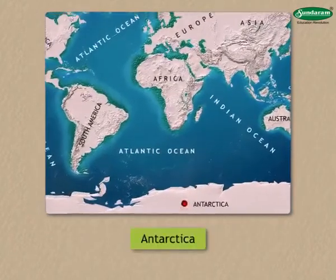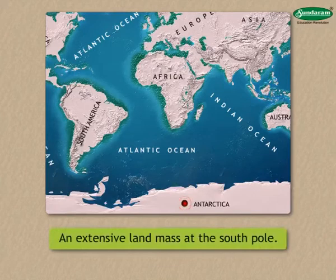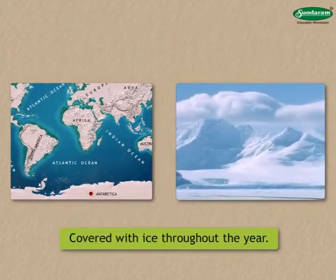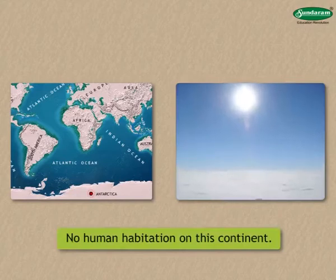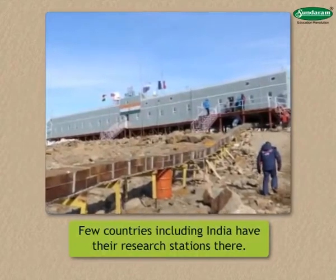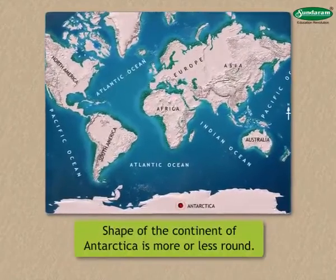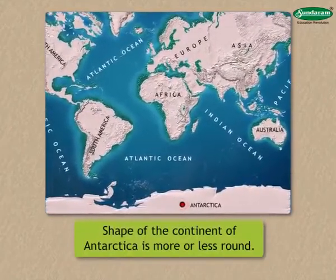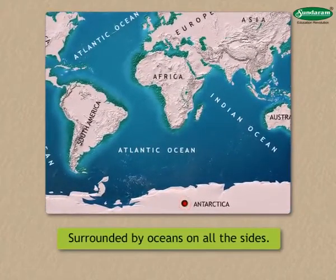The continent of Antarctica has been discovered quite recently. This continent is an extensive landmass at the South Pole. It is covered with ice throughout the year. There is no human habitation on this continent, but a few countries, including India, have their research stations there. The shape of the continent of Antarctica is more or less round, and it is surrounded by oceans on all the sides.